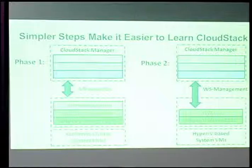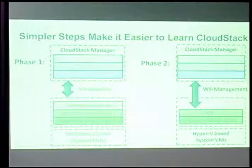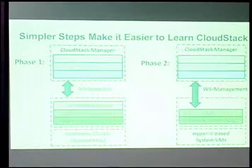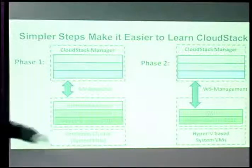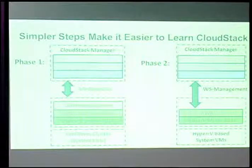The second issue with the Phase 2 design is we want to use Hyper-V-based system VMs. CloudStack puts VMs out in the data center that it relies on for services: a secondary storage VM that manages archiving templates, a console VM so you can pull up a console for VMs in the cloud, and a virtual router providing network services like NAT translation. We really want those to run natively on our Hyper-V server. We also need some changes to core CloudStack because the orchestration engine needs to be aware of Hyper-V image types.